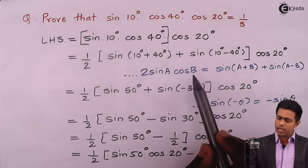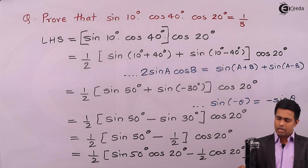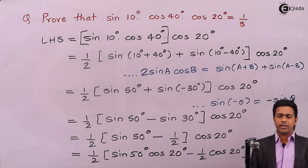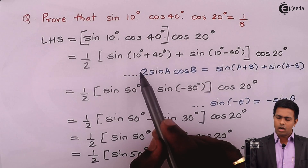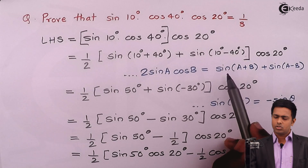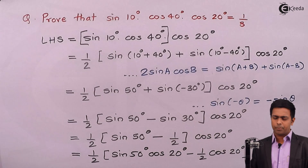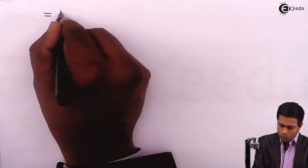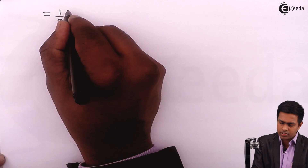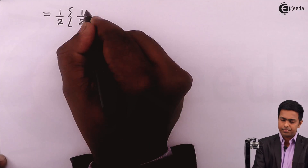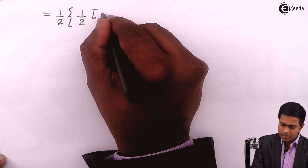The first term sin(50°)·cos(20°) again matches the same defactorization formula, with A = 50° and B = 20°. Taking the factor of 2 to the other side gives another 1/2. Applying the formula once more gives 1/2 · [sin(70°) + sin(30°)] inside new brackets.